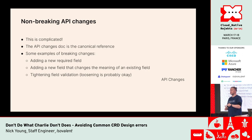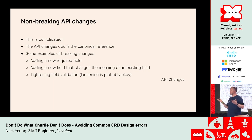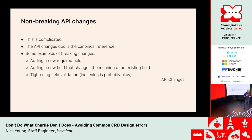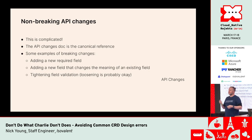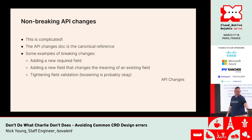Examples of breaking changes: adding a new required field is obviously breaking. Adding a new field that changes the meaning of an existing field is breaking — for example, if a new field causes a timeout to now mean client timeout instead of backend timeout. One that has caught Gateway API a couple of times: tightening field validation is a breaking change, but loosening it is okay. When doing field validation, make it as tight and small in scope as possible so you can loosen it later if needed.